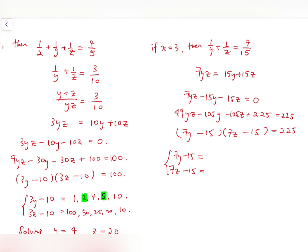Now again, as we have assumed that y is a smaller number, so we can take smaller factors of 225 for 7y minus 15, which are 1, 3, 5, 9, and 15. And we can write corresponding solutions for 7z minus 15, but in fact, if you check one by one, you'll realize that there is no solution.